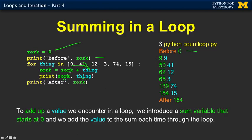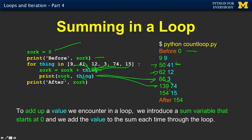Then 41 comes in. We take nine plus 41 — the running total is 50. We read 41. Go back up. 12 comes in: 50 plus 12 is 62. Next time we get three: 62 plus three is 65. Then we get 74: 65 plus 74 is 139. We go and do the last one, 15: 139 plus 15 is 154. The for loop is done, so out we come. When it's all said and done, this running total becomes the total.